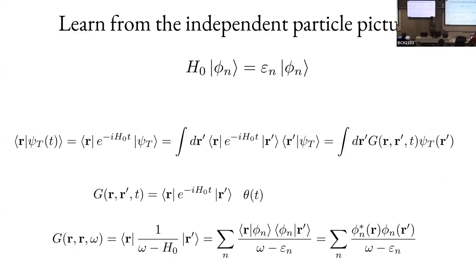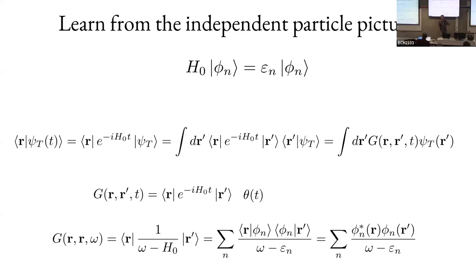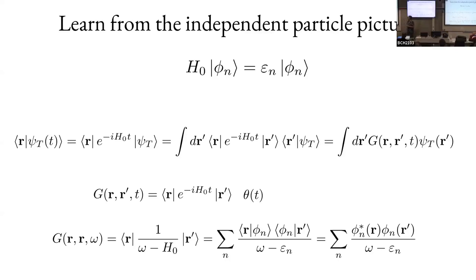We insert the identity again, and we have a state we prepare, we calculate the probability of finding an electron at position r1, propagate from r' to r with the Green's function, and obtain the probability to find the particle at time t at position r. The Green's function is defined with the theta function so t is always greater than zero. Taking the Fourier transform in time gives one over omega minus epsilon_n.